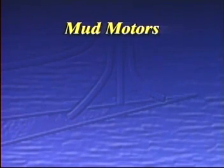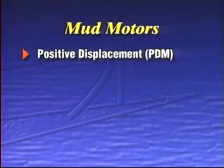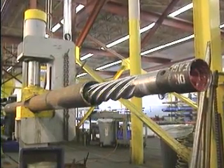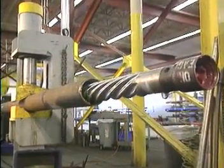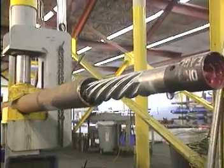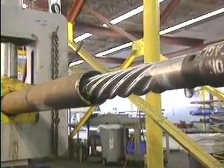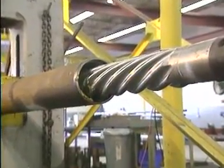Downhole motors are commonly known as mud motors because they're driven by the circulation of the drilling mud. There are two basic types of mud motors: positive displacement motors and turbine motors. The positive displacement motor, or PDM, is easily the most versatile tool for building or maintaining hole angle.